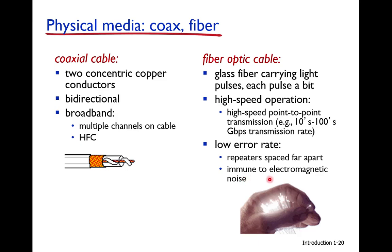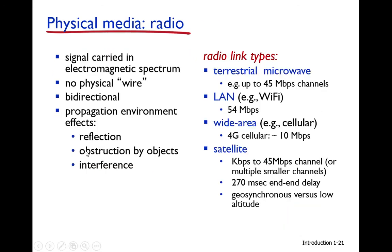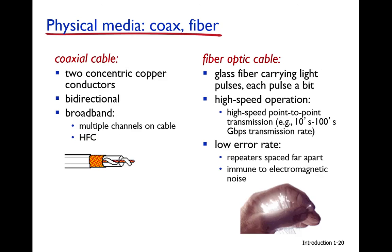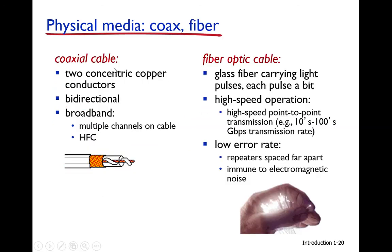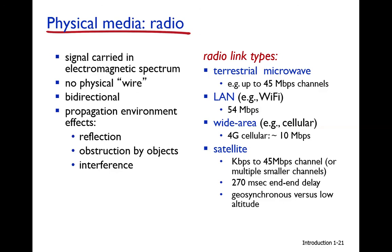Fiber optics is immune to electromagnetic noise because it is often shielded. Coaxial cable is also shielded, giving it immunity to electromagnetic noise and crosstalk. This concludes our discussion of guided physical media — wired media — which included twisted pair cable, coaxial cable, and fiber optic cable. Now we move on to unguided physical media.